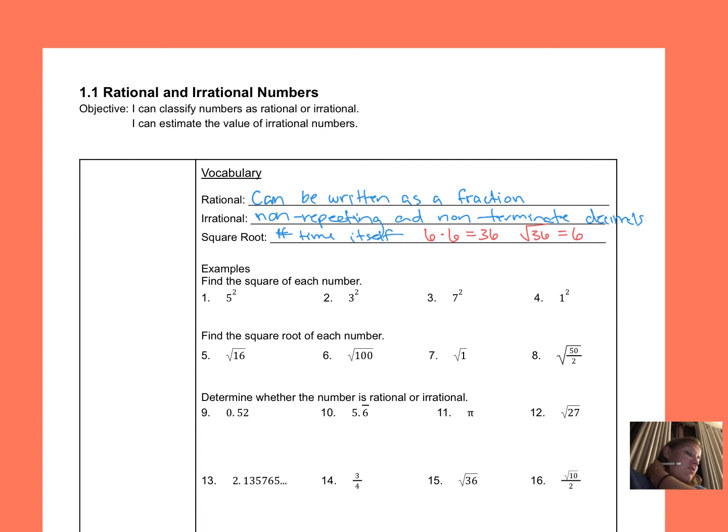On number 1, we're going to find the square of the number. This exponent form tells us that I'm taking the base of 5 times itself, 2 times. So 5 squared means 5 times 5, which is 25. Number 2: I'm taking the base of 3 times itself 2 times, so 3 times 3 is 9. Number 3: 7 times 7 is 49. And number 4: 1 times 1 is still just 1.